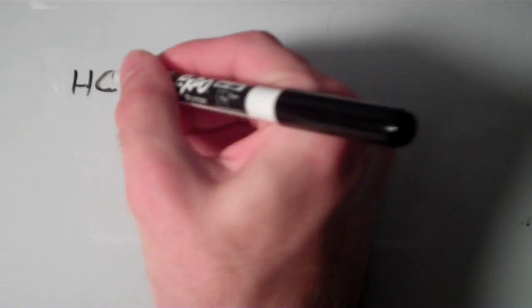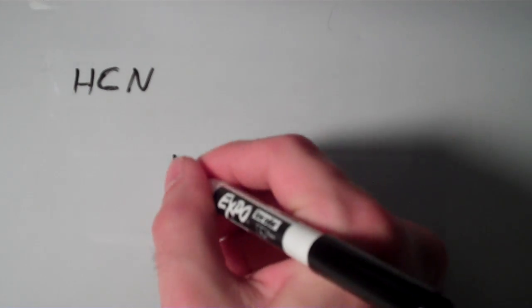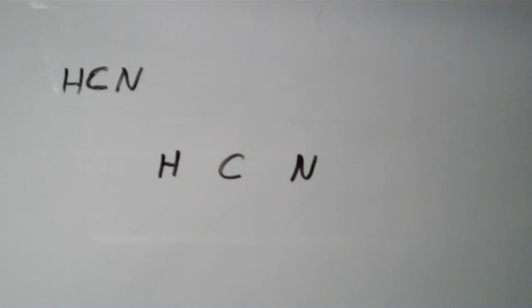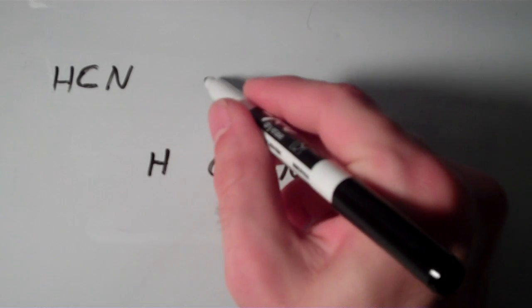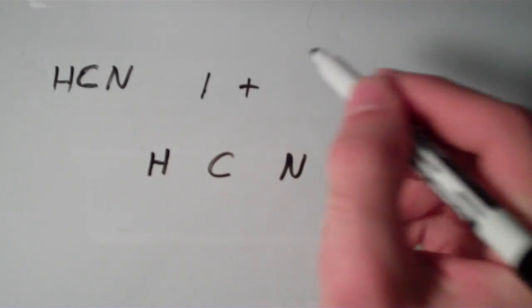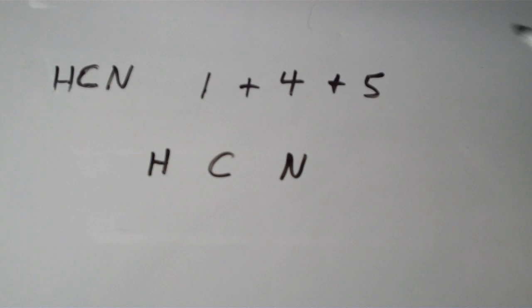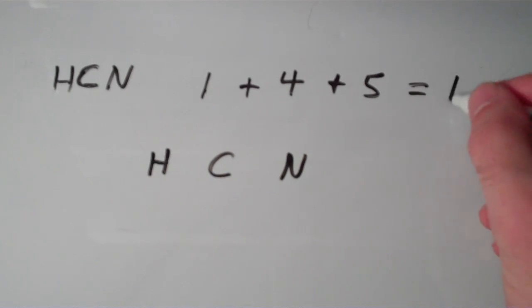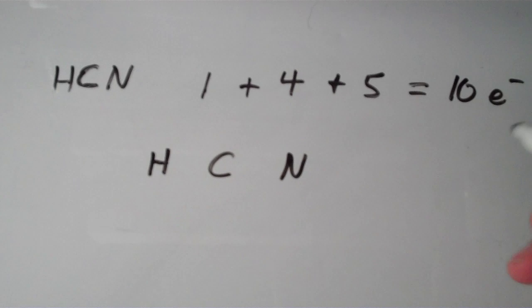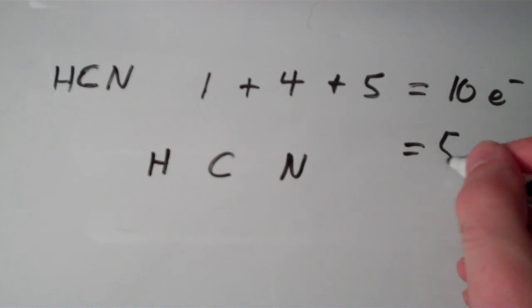Now let's do HCN. The hydrogen atom will not be a central atom. Between carbon and nitrogen, carbon is less electronegative, so carbon will occupy the central position and the hydrogen and nitrogen will be terminal. Now we count the valence electrons: hydrogen has one, carbon has four, nitrogen has five — that's a total of ten valence electrons. Divide that by two and you get five electron pairs.